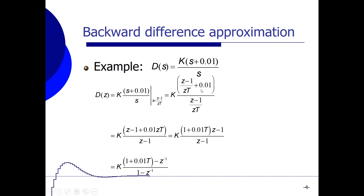We have fractions in this representation, so we get rid of them by multiplying numerator and denominator by z · T. That gives k times (z − 1) + 0.01 · z · T. Rearranging the numerator by collecting z terms gives k times [(1 + 0.01T)z − 1] divided by (z − 1). To implement this in Simulink, it's easier to use negative powers of z, so we divide numerator and denominator by z, giving k times [(1 + 0.01T) − z⁻¹] divided by (1 − z⁻¹).